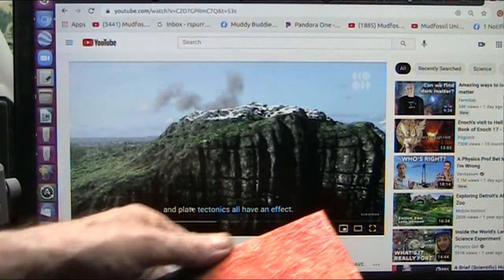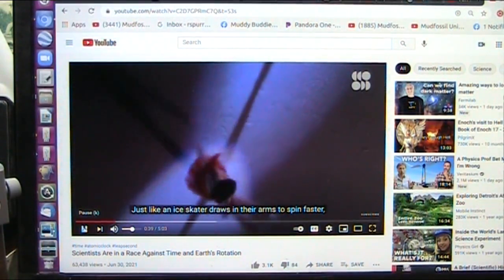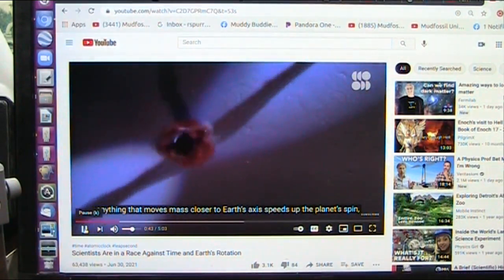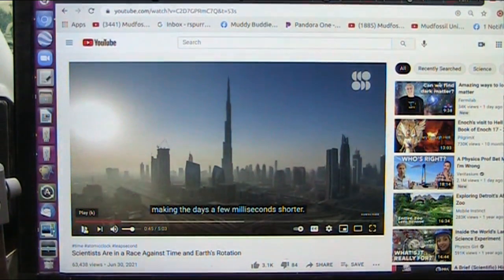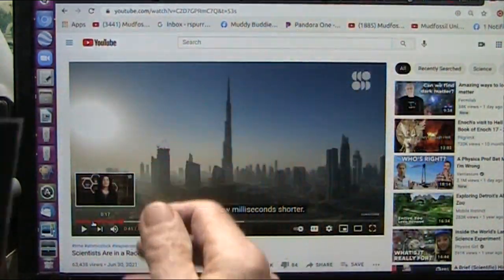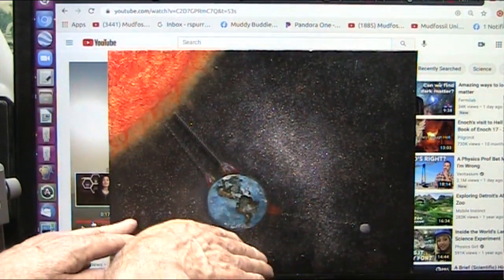Listen to this. They talk about plate tectonics and all this stuff. Well, we're going to see exactly why this is being caused. Just like an ice skater draws in their arms to spin faster, anything that moves mass closer to Earth's axis speeds up the planet's spin, making it go a little faster because the mass is concussing closer to the center of the spin point.